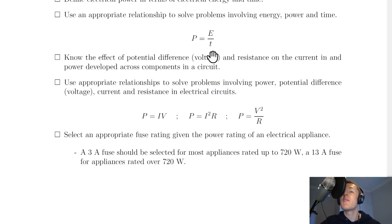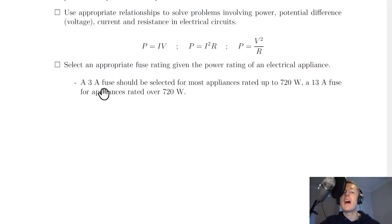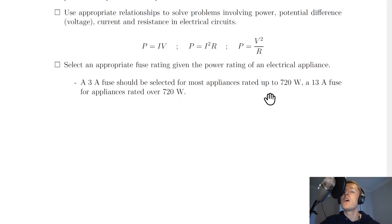Lastly for section five, you need to select an appropriate fuse rating given the power rating of an electrical appliance. A 3 amp fuse should be selected for most appliances rated up to 720 watts, but a 13 amp fuse should be selected for appliances rated over 720 watts. Remember that cut-off number of 720 watts.